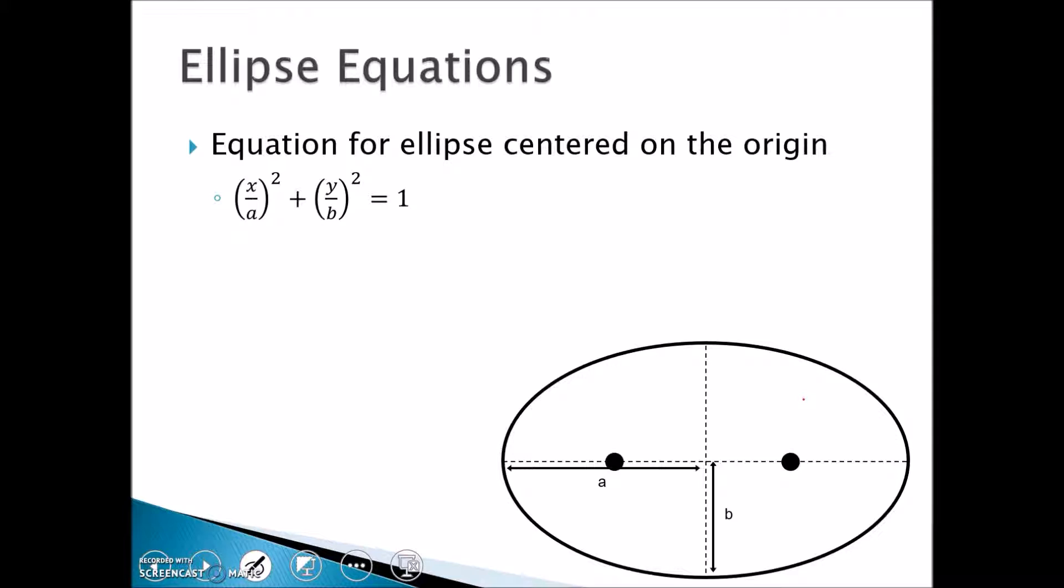If we don't want this ellipse centered on the origin, we make some changes in the x and the y and make our adjustments there. The location for the focal point from the semi-minor axis can be calculated: root of a squared minus b squared, and that gives us this distance right there.